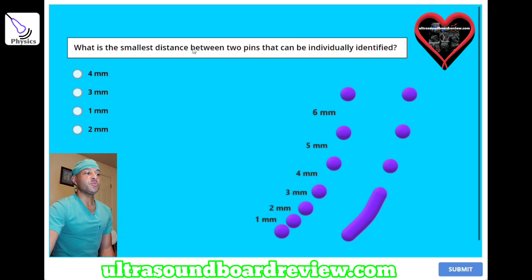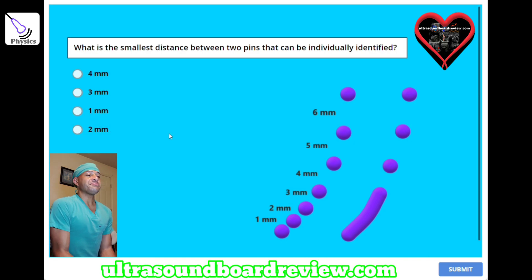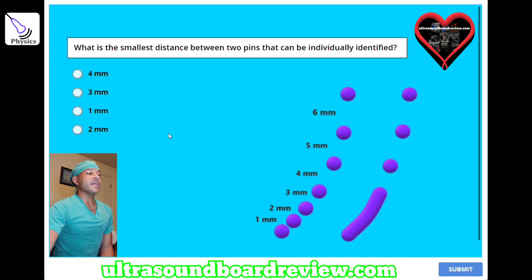What is the smallest distance between two pins that can be individually identified? A, 4 millimeters; B, 3 millimeters; C, 1 millimeter; or D, 2 millimeters. The answer is A, 4 millimeters.